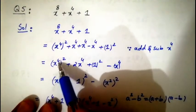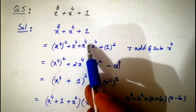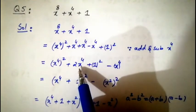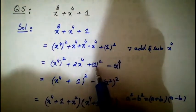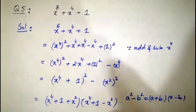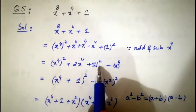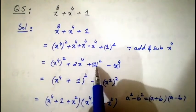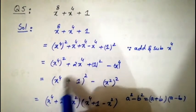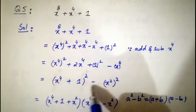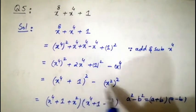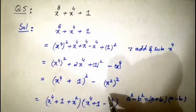So we get (x⁴)² + 2x⁴ + 1 − x⁴. With a = x⁴ and b = 1, the formula a² + b² + 2ab gives (x⁴ + 1)². The minus term −x⁴ can be written as −(x²)². So we have (x⁴ + 1)² − (x²)². Applying a² − b² = (a + b)(a − b) with a = x⁴ + 1 and b = x², we get (x⁴ + 1 + x²)(x⁴ + 1 − x²).